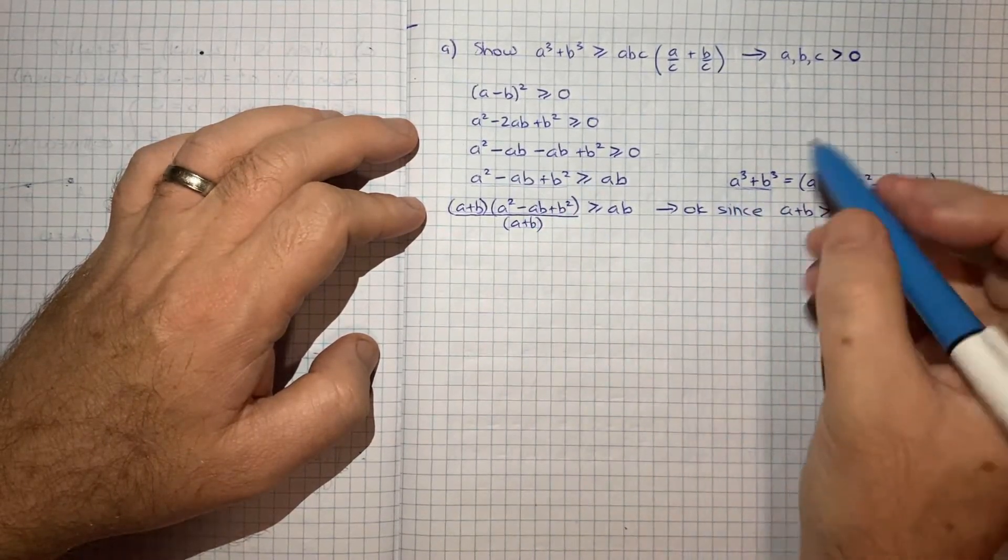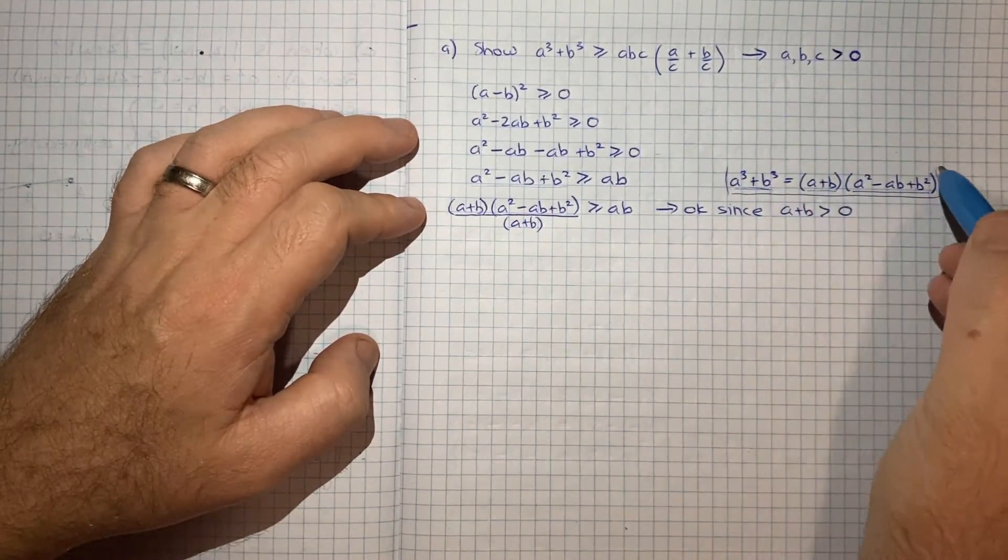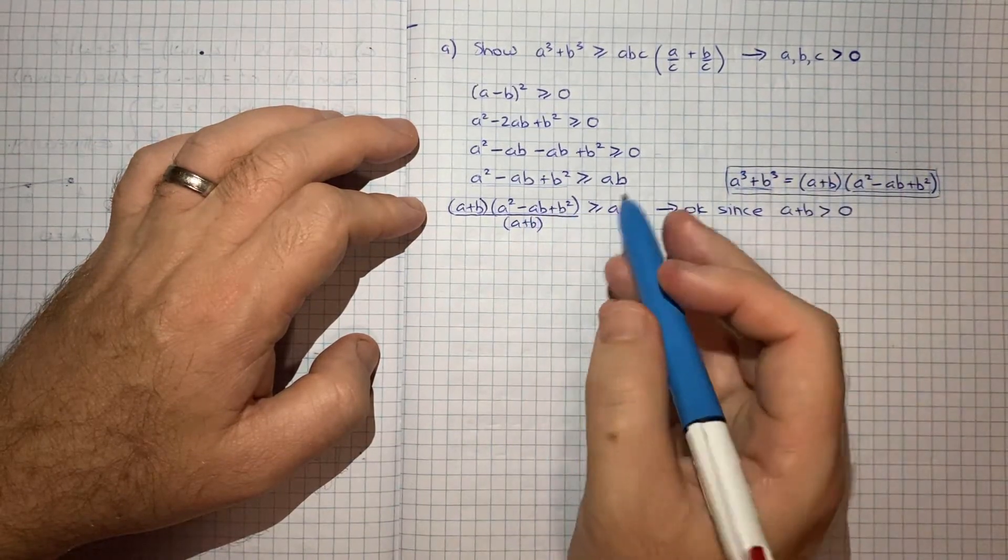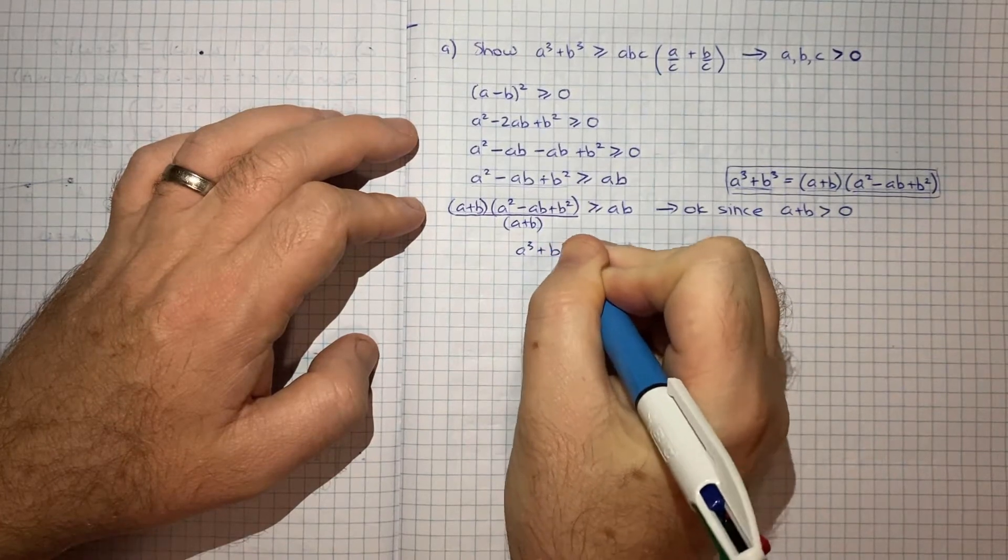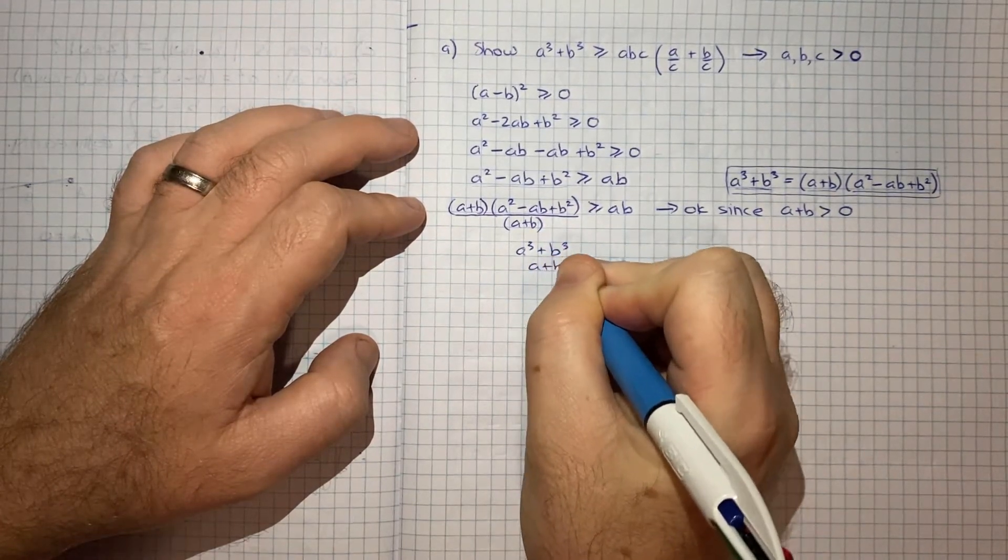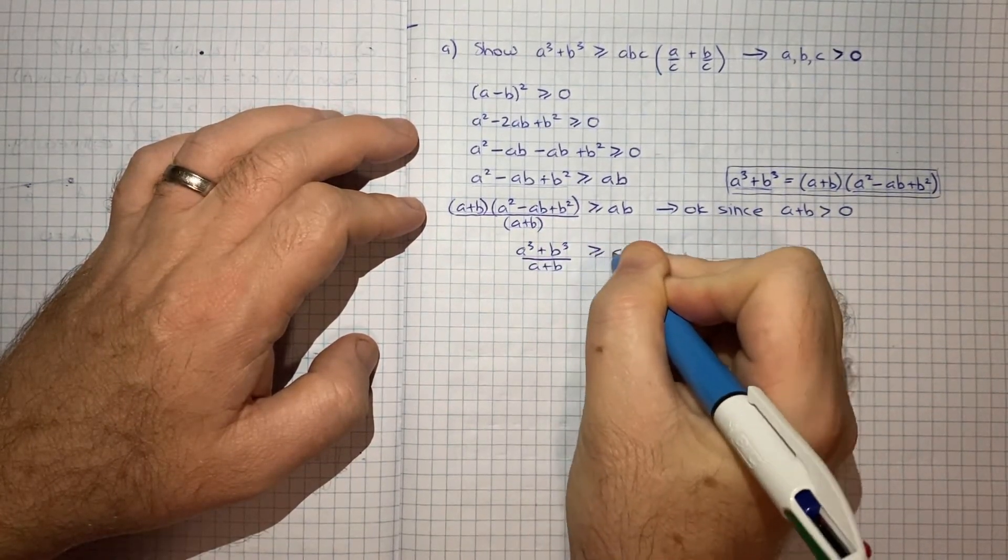So now we can make use of this result here, and we can just insert that in. So we'll get a cubed plus b cubed on a plus b is greater than or equal to ab.